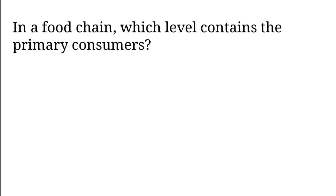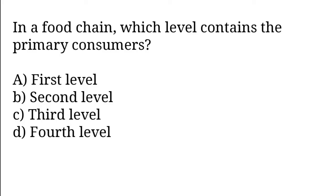In a food chain, which level contains the primary consumers? Options: First level, second level, third level, fourth level.